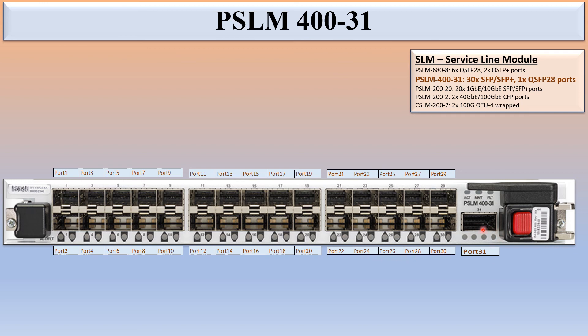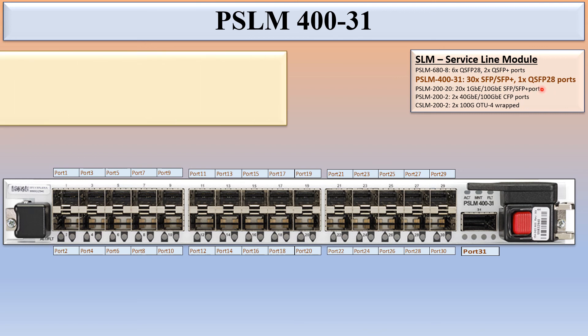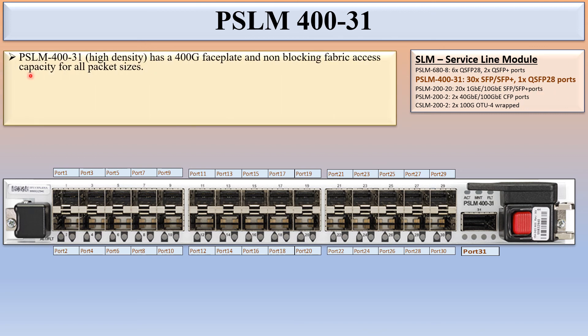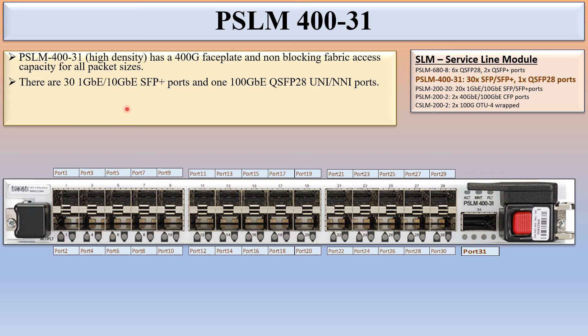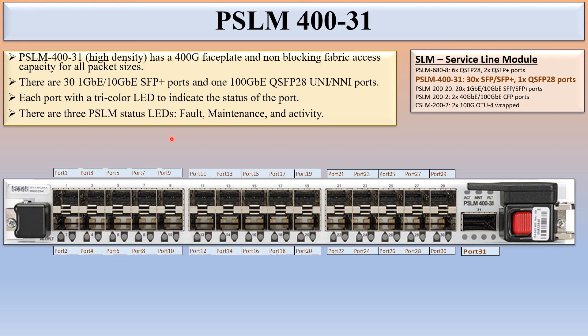Port 31 is fixed for the QSFP28 port. PSLM 400-31 has a 400G faceplate and non-blocking fabric access capacity for all packet sizes. 30 ports are fixed for 1 GB or 10 GB SFP/SFP+ and one port is fixed for 100 GB QSFP28. These ports can be configured as either UNI or NNI ports. Each port has a tri-color LED, and there are 3 PSLM status LEDs: fault, maintenance, and activity. These cover all types of SLM used in CN8700 switches.